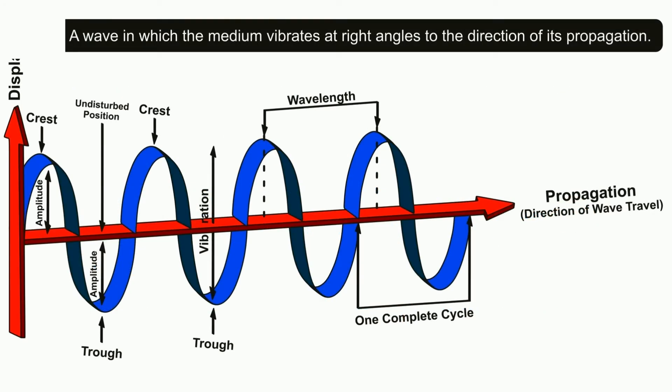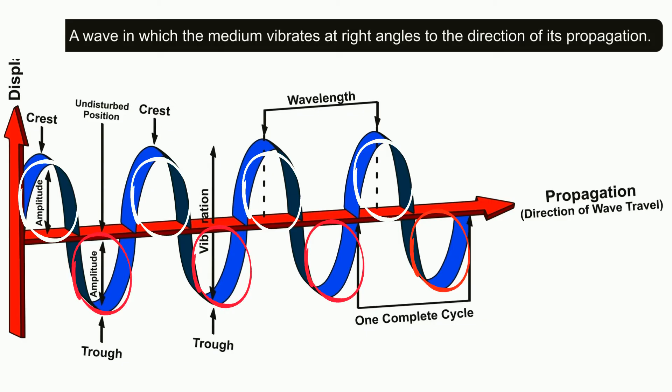Amplitude is a measure of the energy of a wave. It is the distance that the crest rises above the resting point, or the trough is below the resting point. The more energy a wave carries, the greater the amplitude.